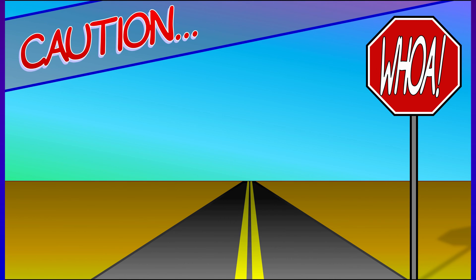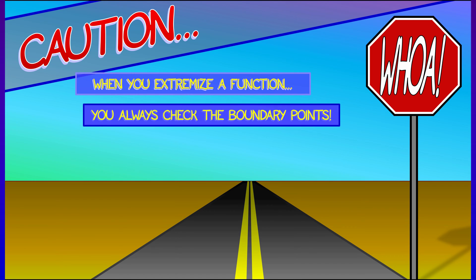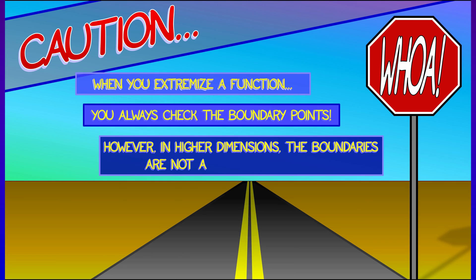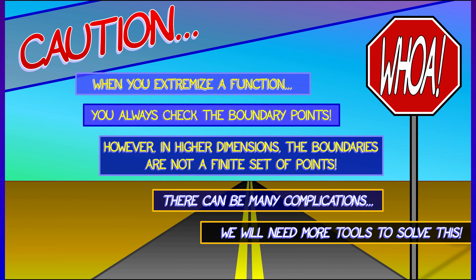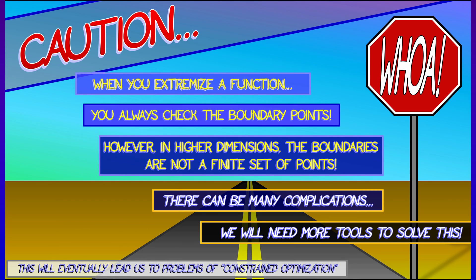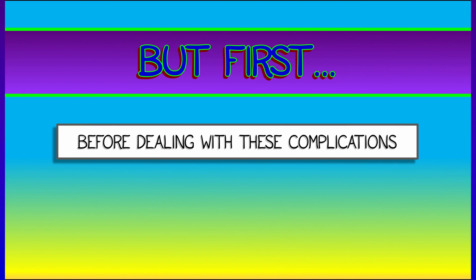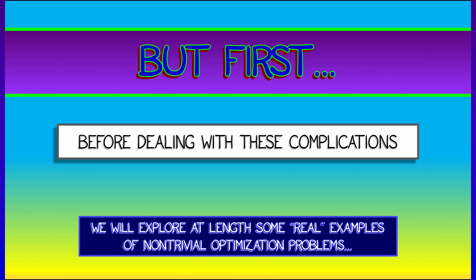But in the context of what we're doing, please be careful. We're only computing local maxes and mins. There's a big difference between that and global optimization. And we've said nothing about checking boundary points, which in higher dimensions leads to problems of constrained optimization, and we're going to need some more tools in order to solve that. But before we go down that road, we're going to pause and take a look at some interesting real-world applications of non-trivial optimization problems in order to practice our skills and see some cool stuff.